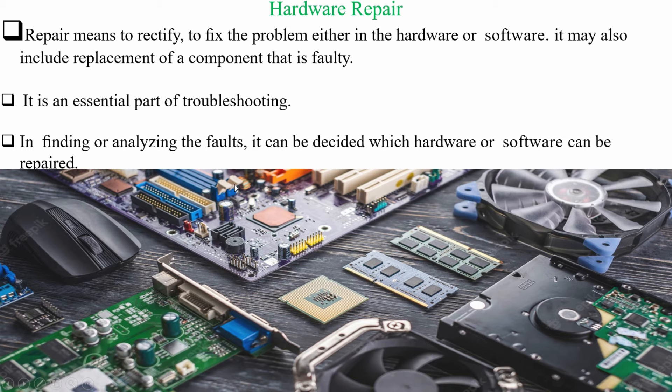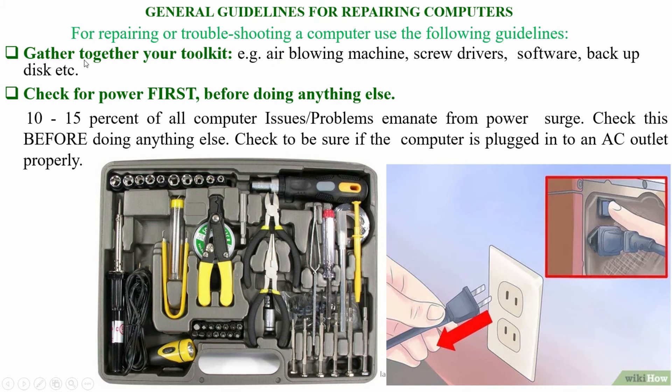In finding or analyzing the faults, it can be decided which hardware or software can be repaired. That means we can't exactly say what has failed unless we check it. We are going to go through the procedures to find what kind of component has failed. These are the general guidelines for repairing a computer.